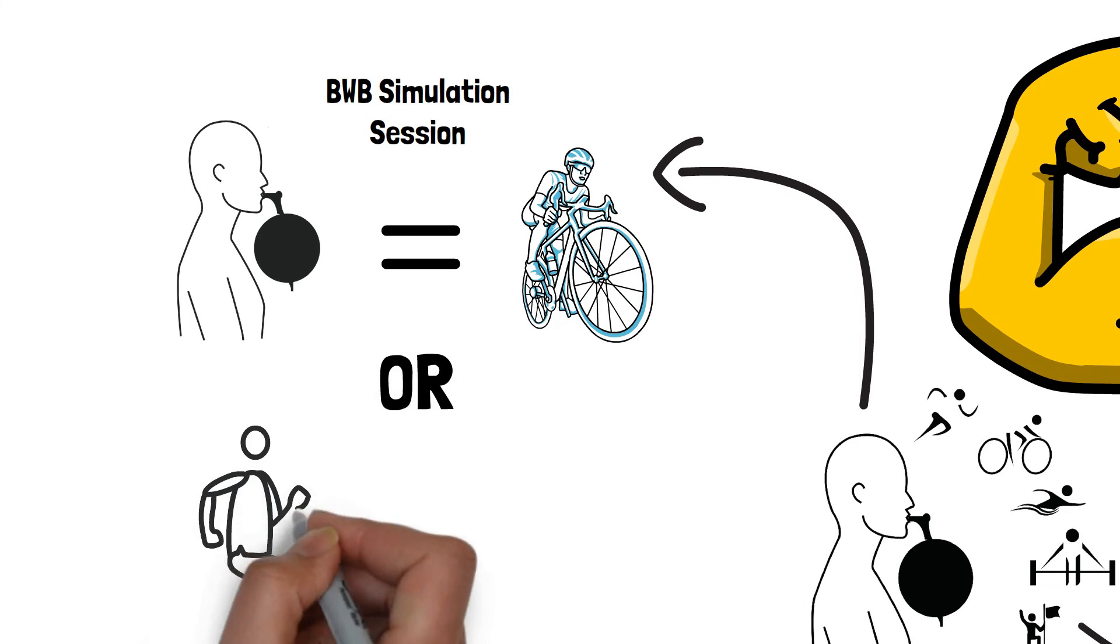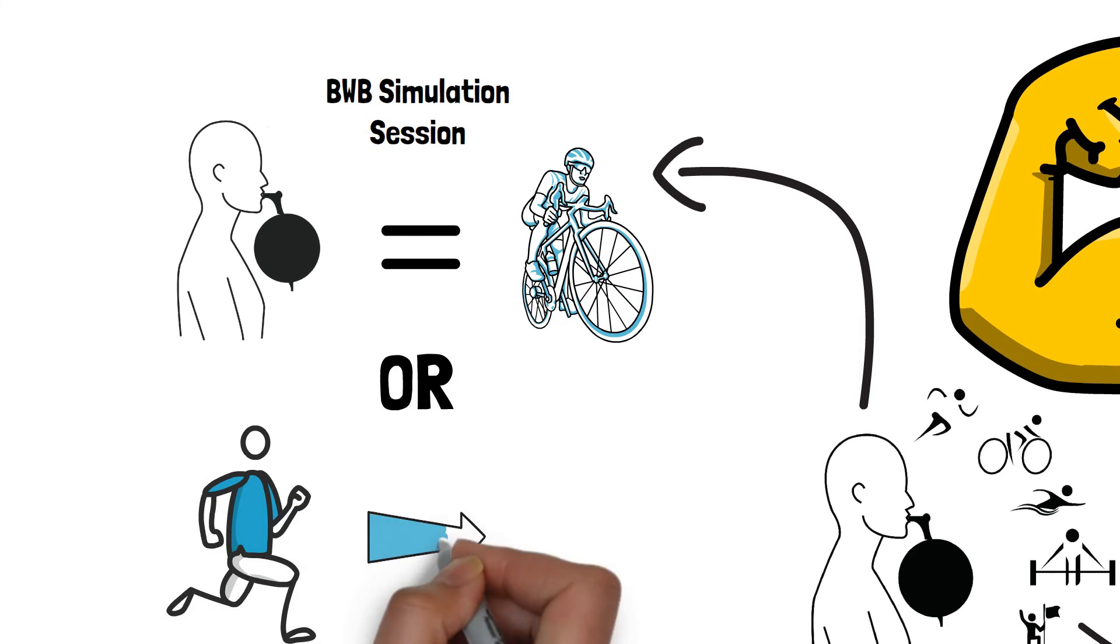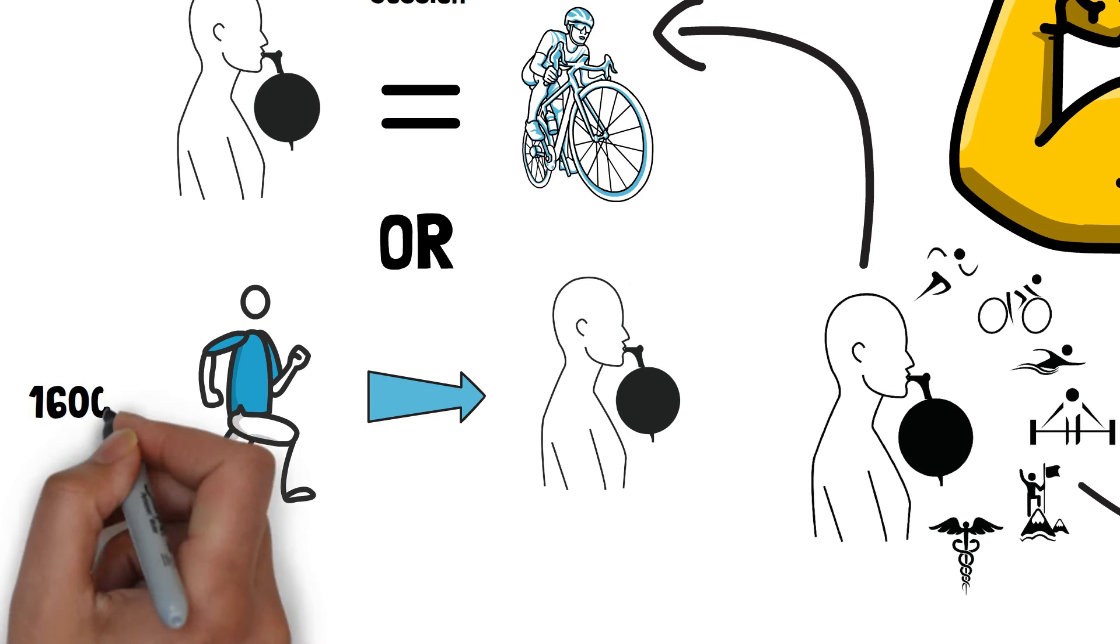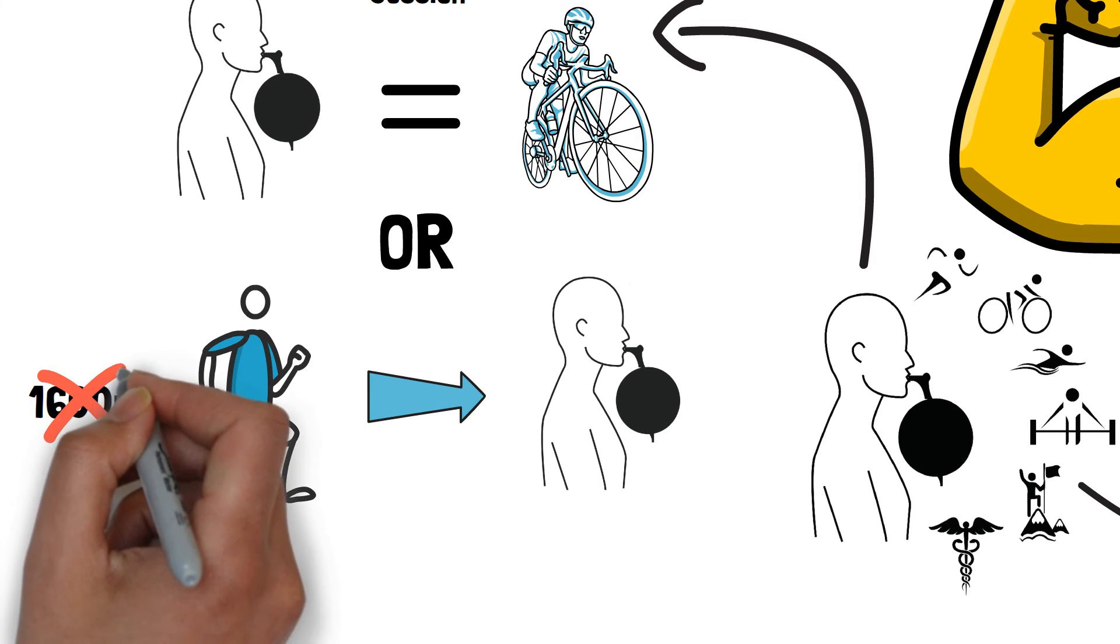Another way you can improve the quality of training is by adding Breathe Way Better to your sessions, like a track session, for example. Instead of running a 1600 meter interval at high intensity, you can run an 800 meter interval and add the Breathe Way Better sessions between the run intervals to prolong the load on the respiratory system, as if you were to run a 1600 meter, giving you a great training effect with fast recovery time for the rest of your body.